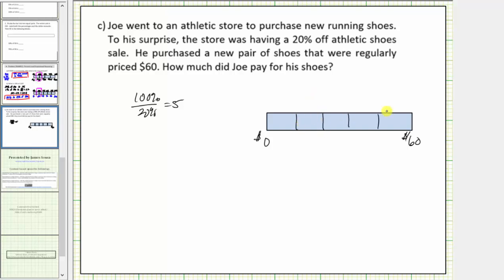Labeling the percents along the top, we have 0% on the left, 100% on the right, and we count by 20%. So 20%, 40%, 60%, 80%, and 100%.